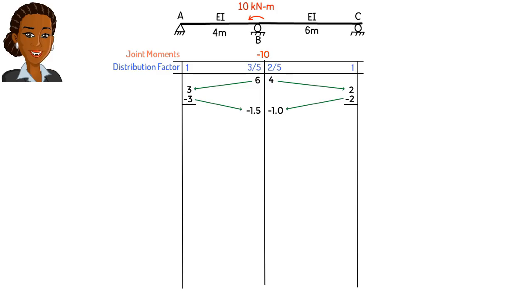Consequently, joint B has to be balanced again. Sum of the moments at the joint equals negative 2.5. We add positive 2.5 to the joint using the distribution factors, like this. We then carry over half of each moment to the other side of the member. In the next step, we balance joints A and C. Then, we carry over the moments. We continue this process until the moment values get close to zero.